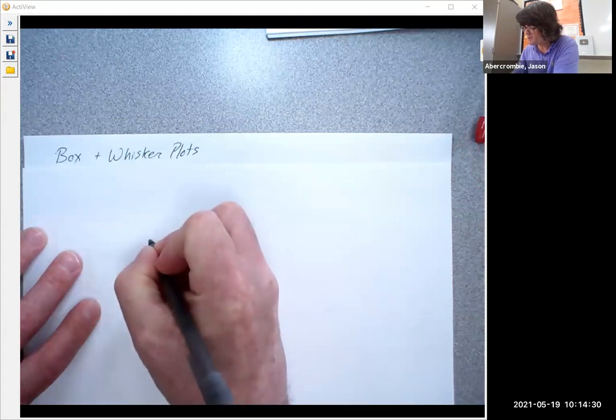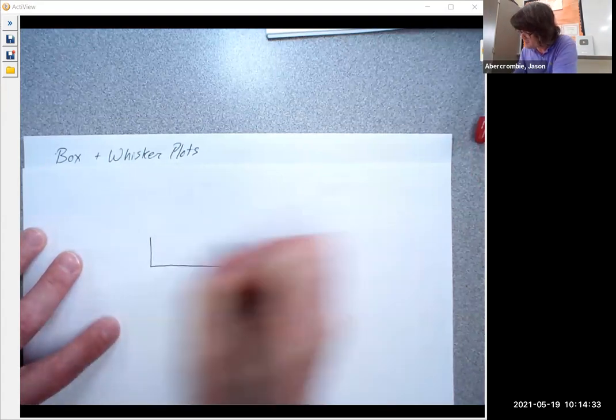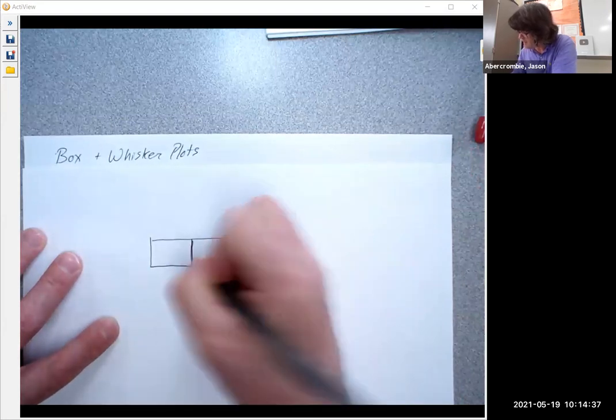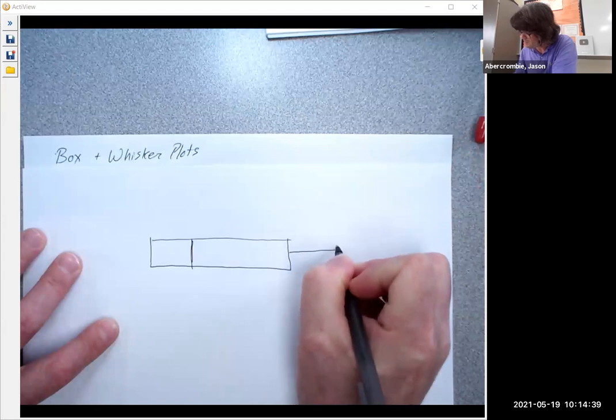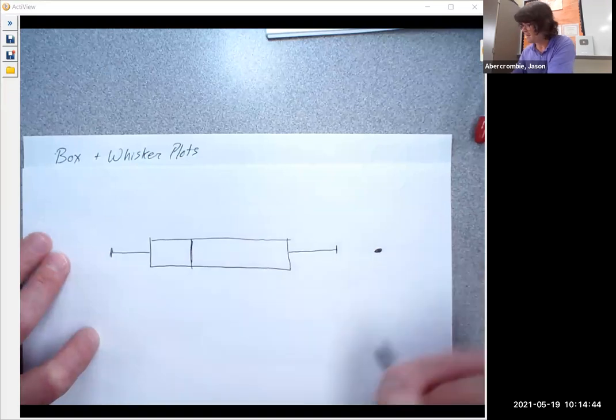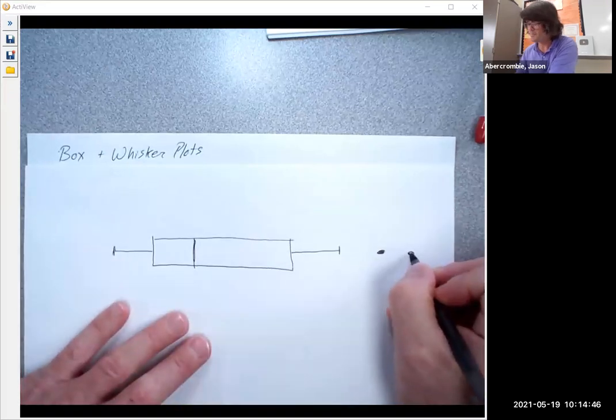So a box and whisker plot looks like this. You've got a box. Maybe a line in the middle somewhere. Then you've got whiskers. Then you might have some dots. Maybe a dot right there. Maybe two dots.